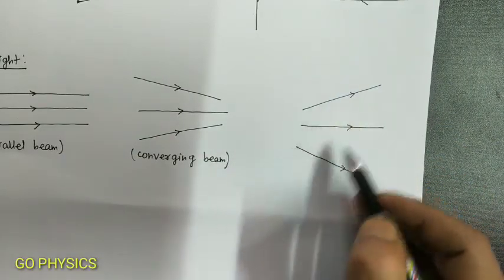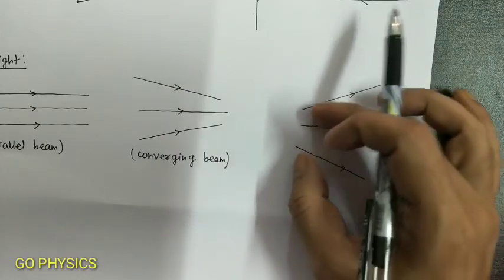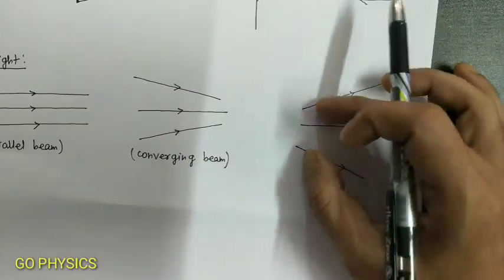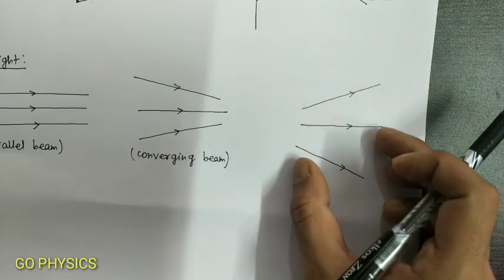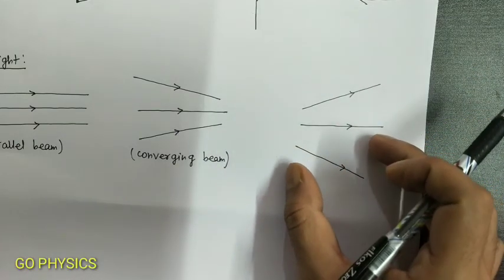In the third diagram, the rays are diverging as they are going away from each other. So this kind of beam of light is called a diverging beam.